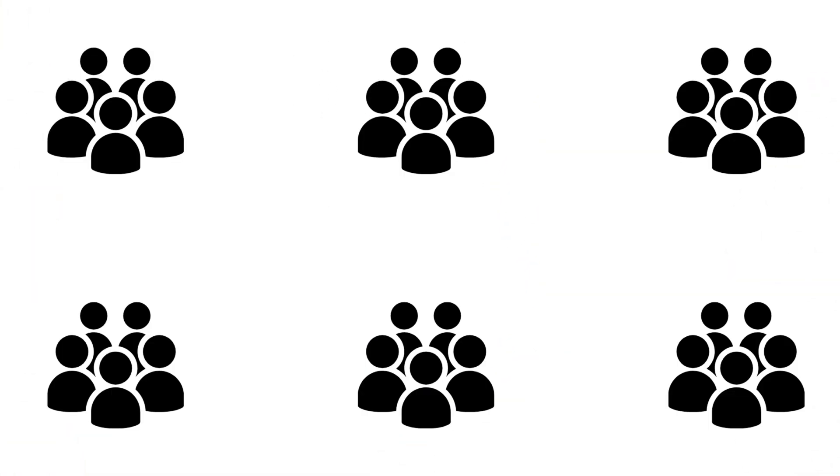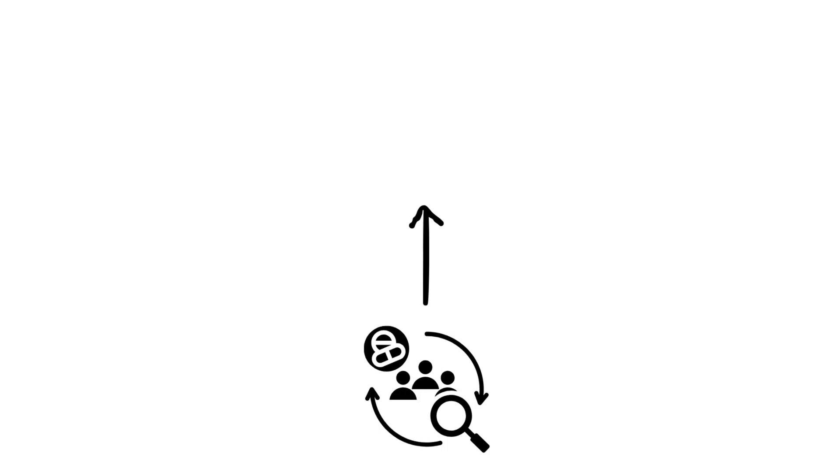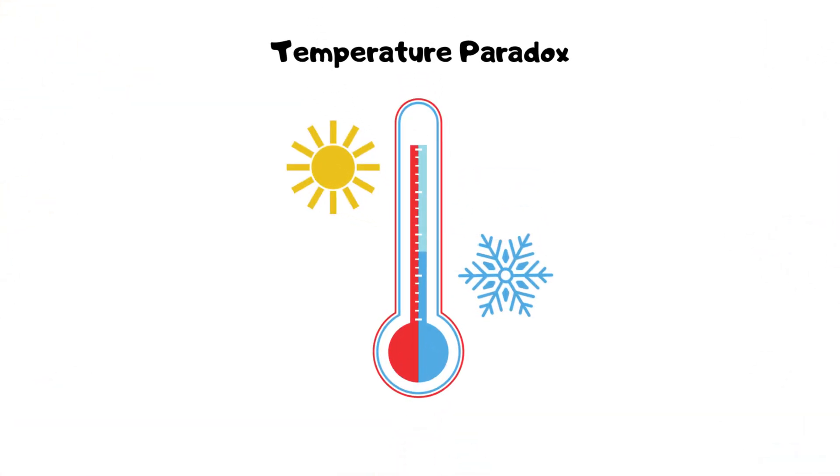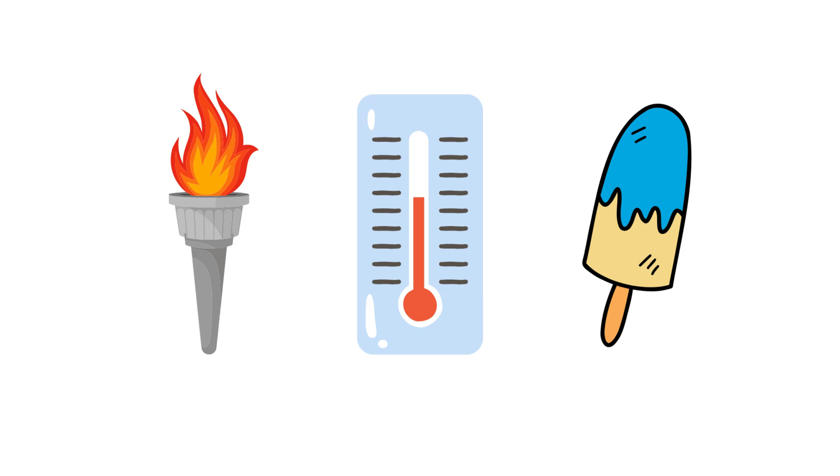Simpson's paradox. A trend observed in subgroups can reverse when all groups are combined. Temperature paradox. When you put two objects of different temperatures together, the temperatures do not come together but are balanced in the middle.